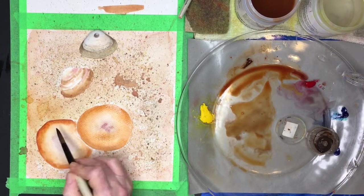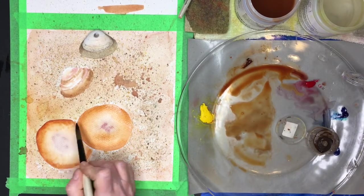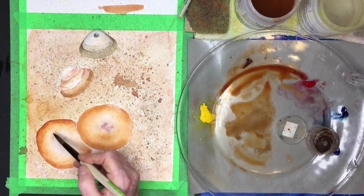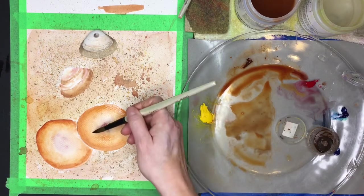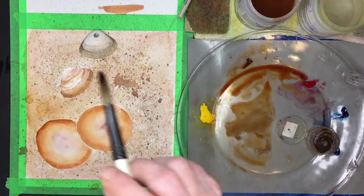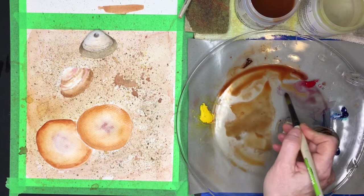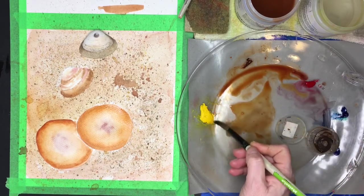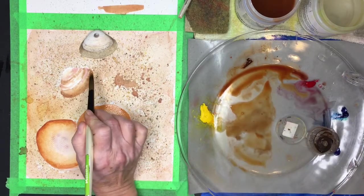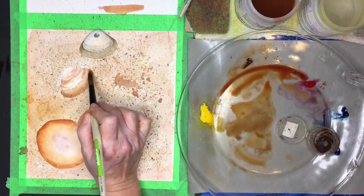And I can wet this one and make it come in a little bit more, just a little bit of water. And maybe add a little bit of yellow here on this, on this side of this shell.